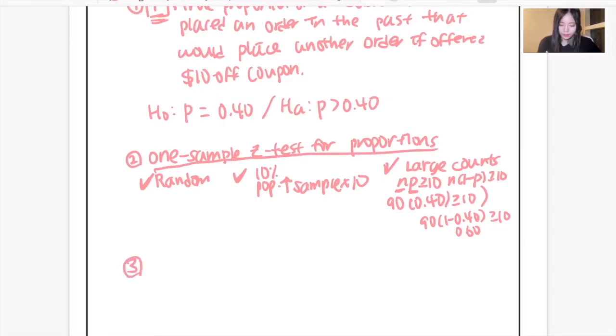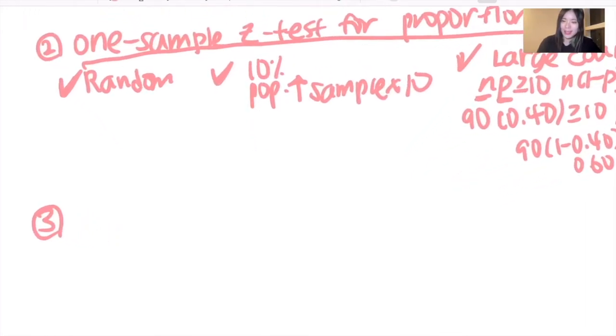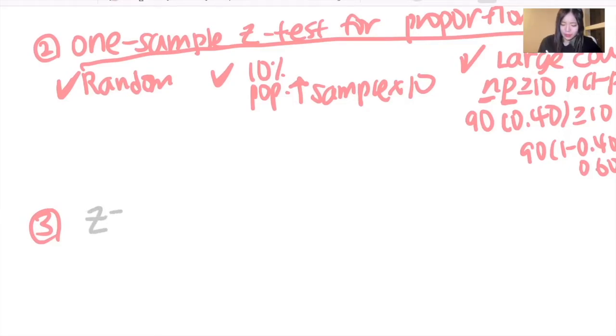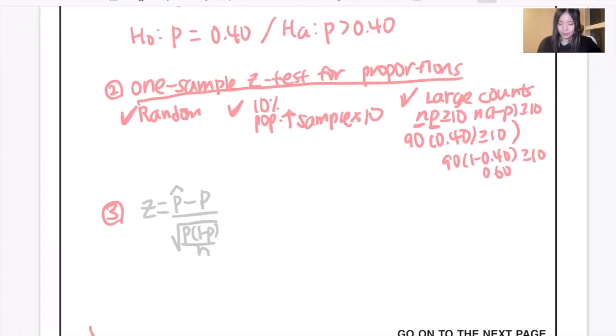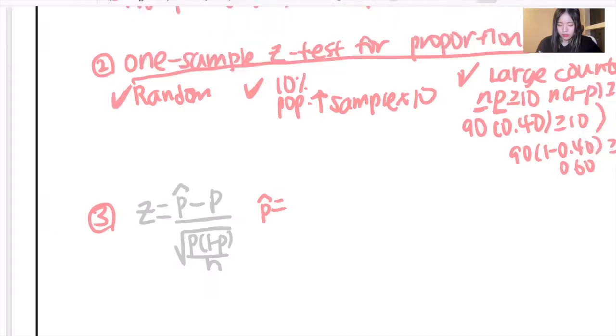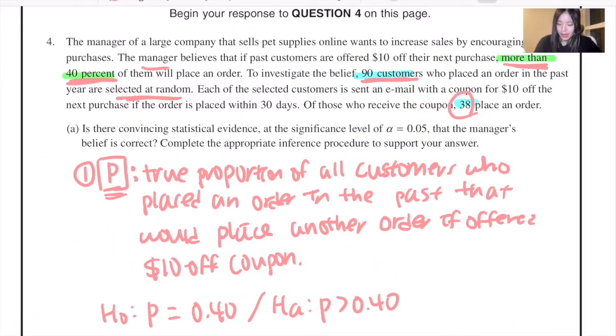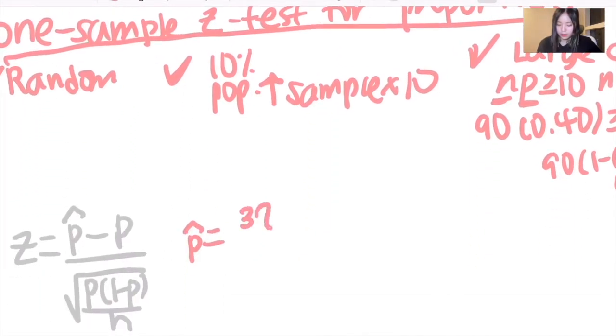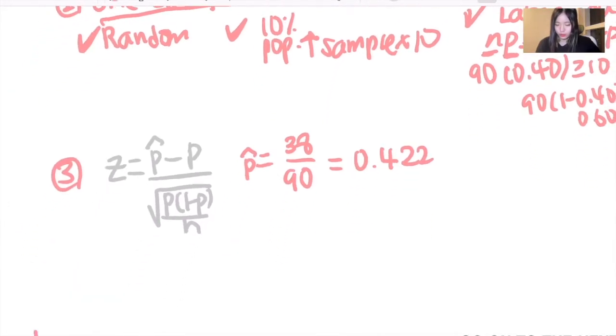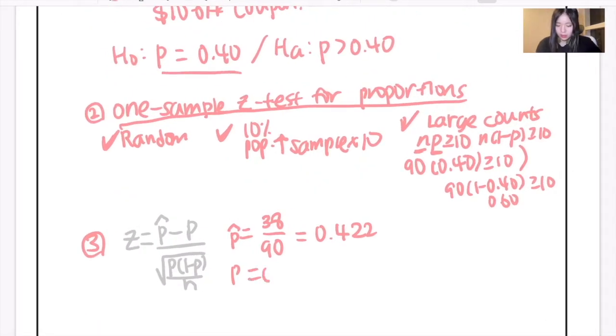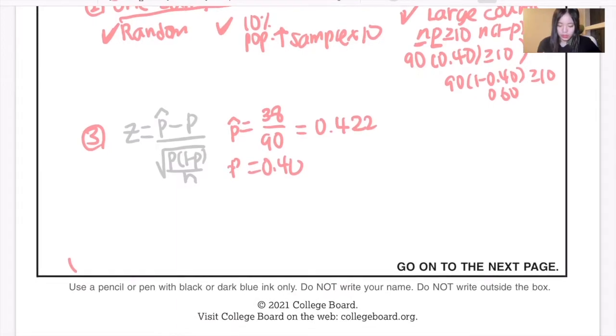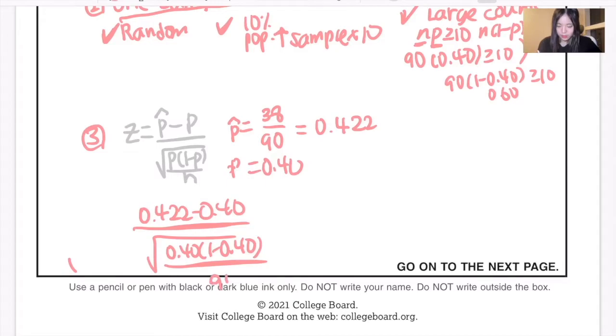Moving on to the third part, where you actually conduct the test and get the test statistic. The test statistic would be z equals p-hat minus p over root p(1-p) over n. And the p-hat we have in this question would be the point estimator, so 38 out of 90, which would be equal to 0.422. And the p over here we have is 0.40. So if you substitute over here, or if you have a calculator, you could put the numbers in. The number is 90. Then you will have 0.43.